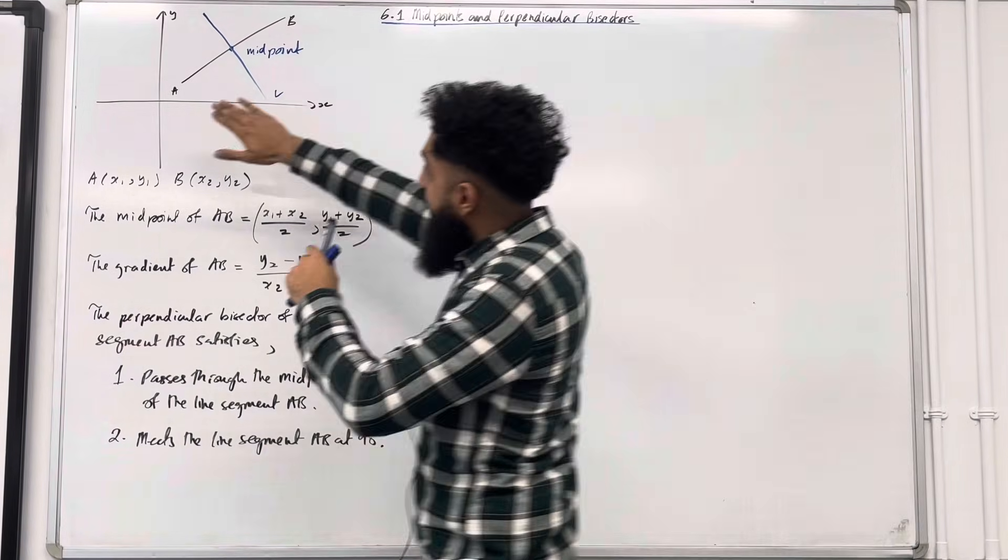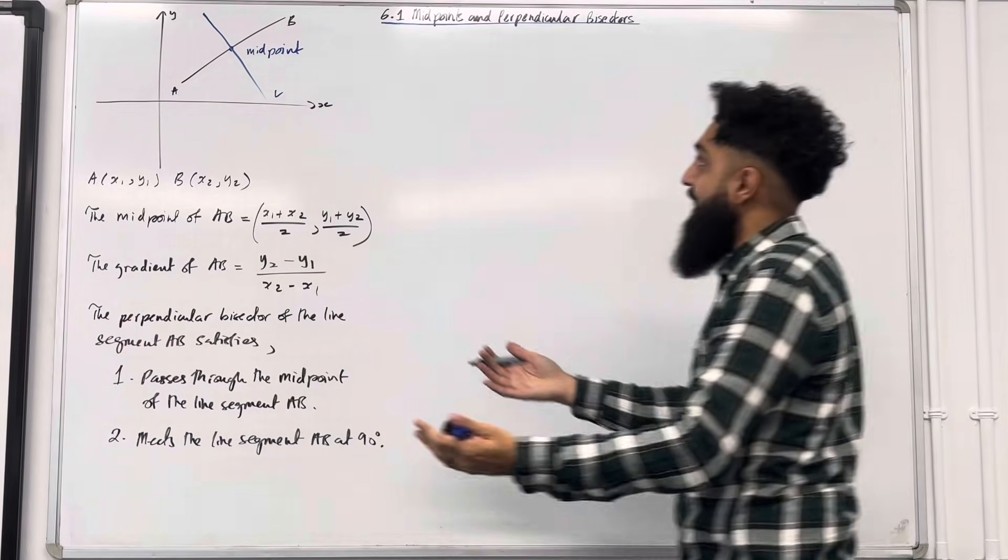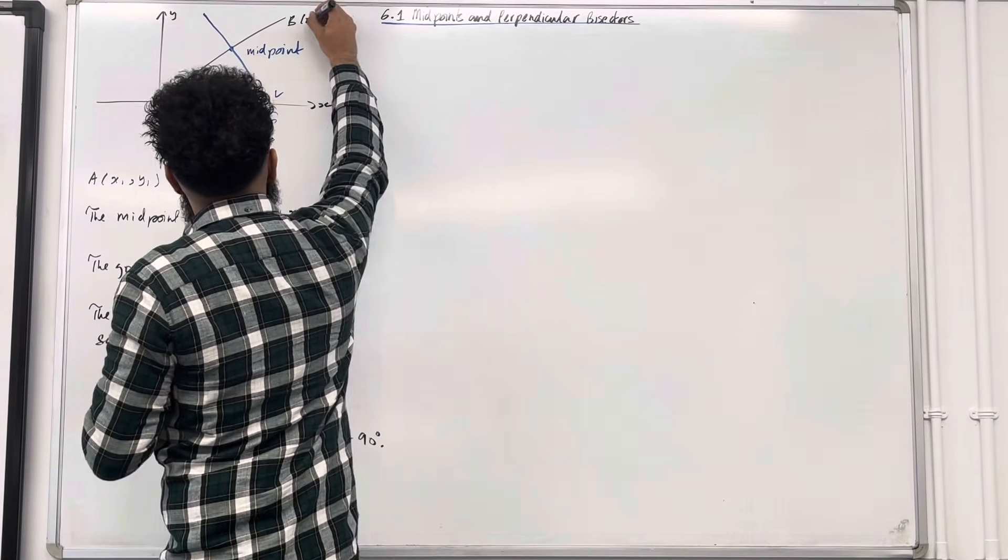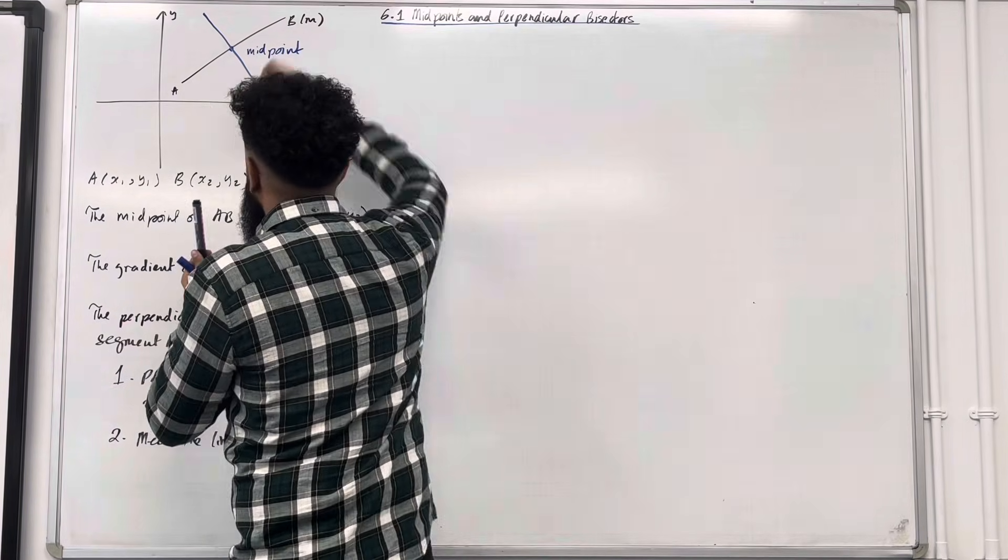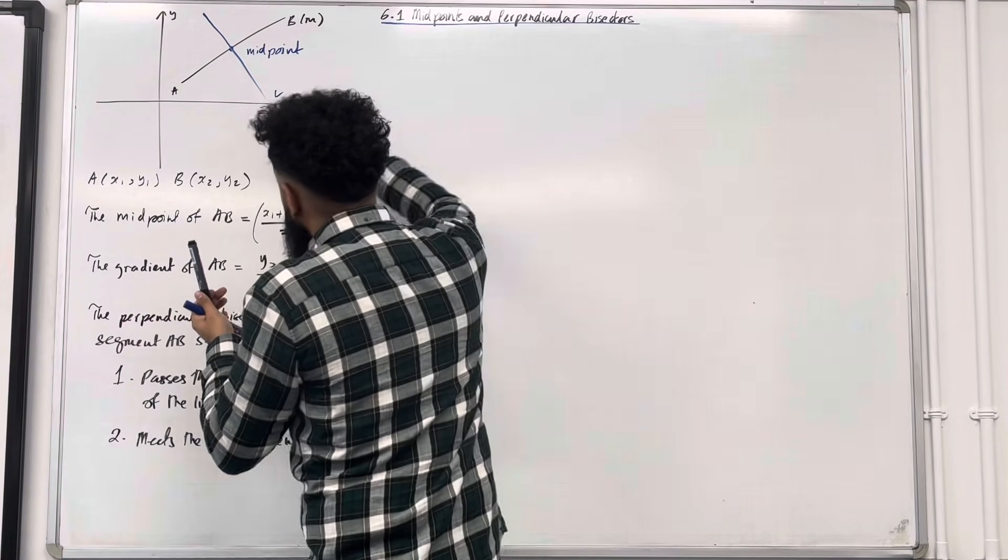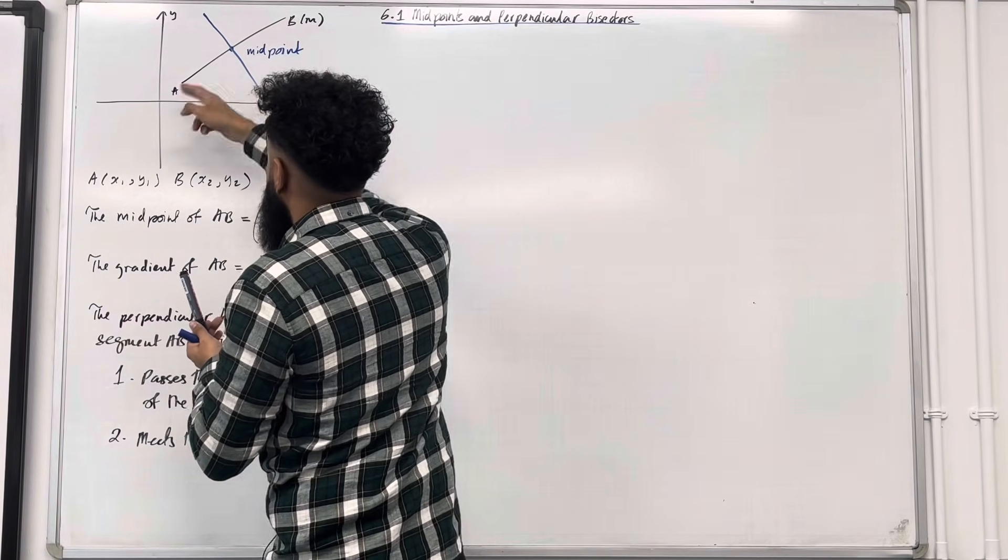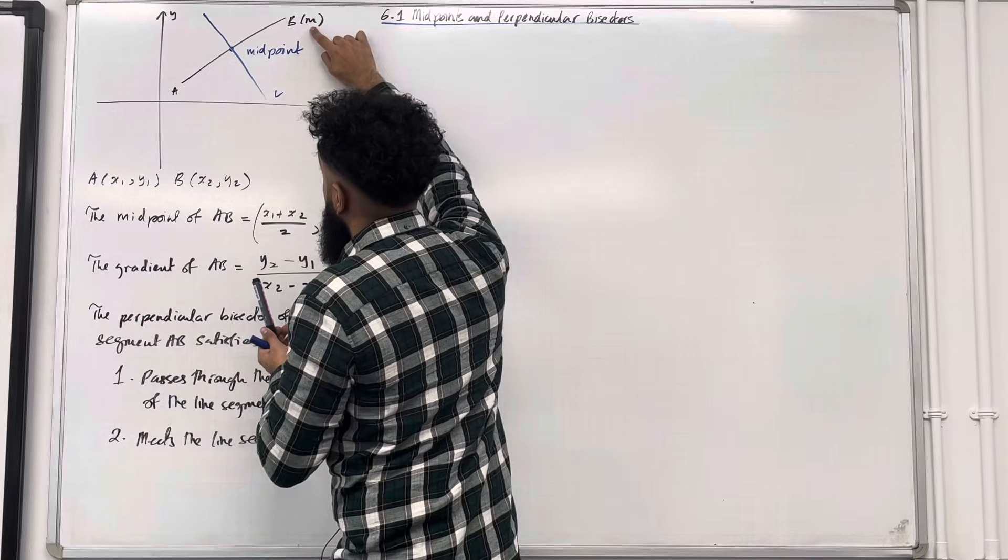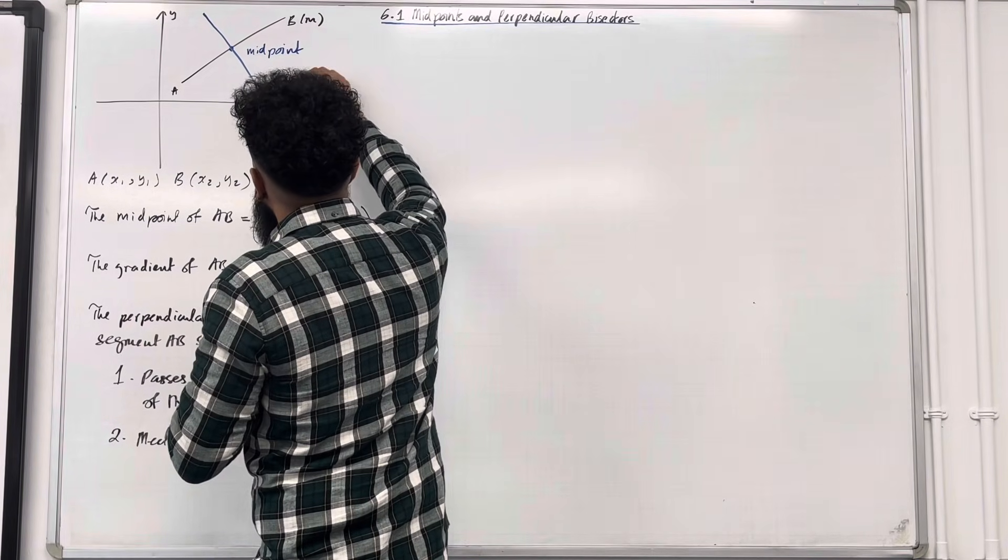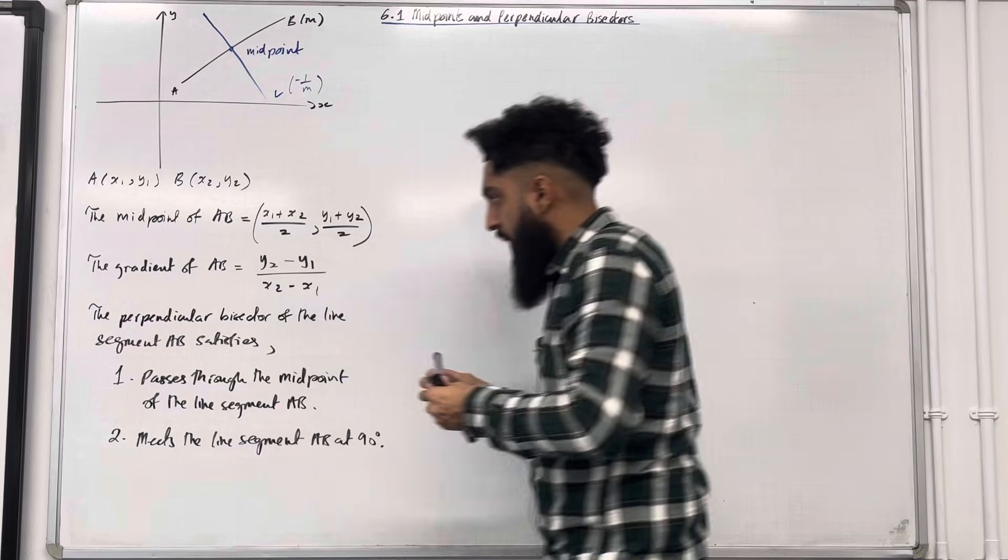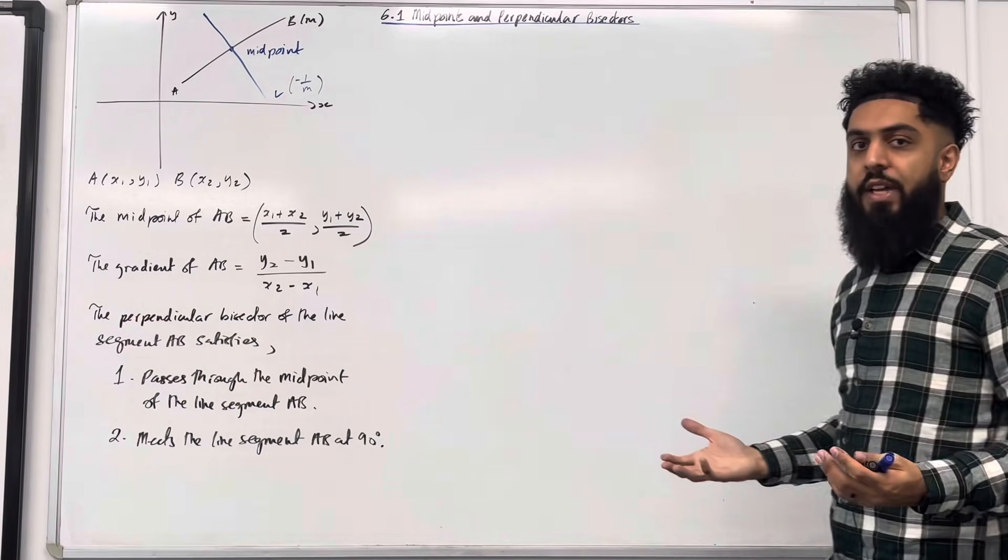If you look at the line segment A to B, it has a positive gradient. We can call this gradient M. Since the line L is perpendicular to the line segment A to B, the gradient of L has to be the negative reciprocal of the gradient of the line segment A to B. So the negative reciprocal of M will just be minus 1 over M. Now we're going to use all of these key facts to answer an exam style question.